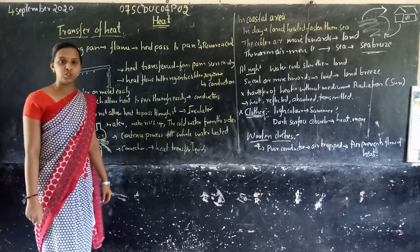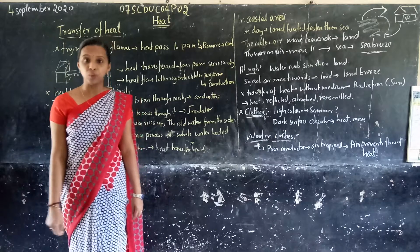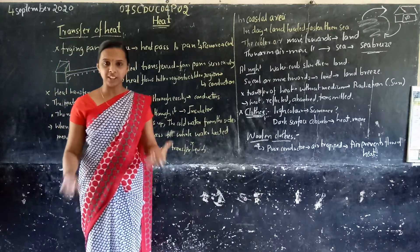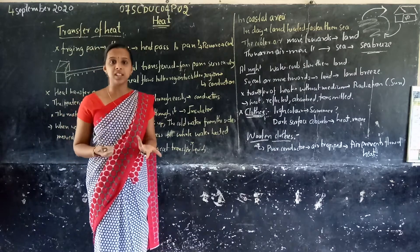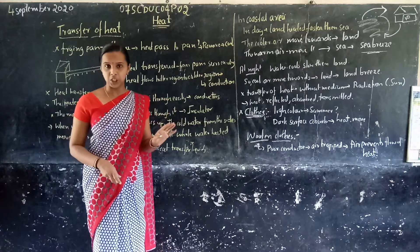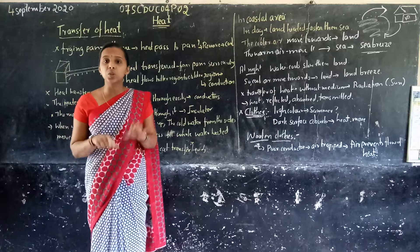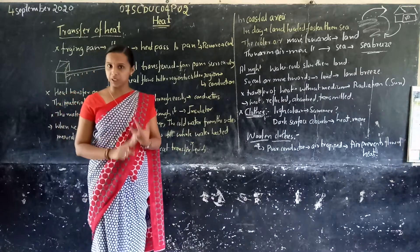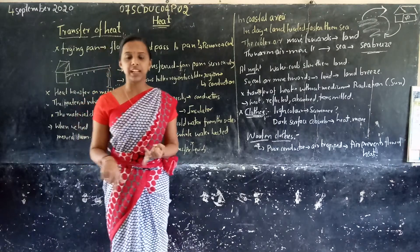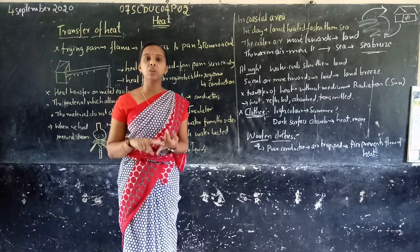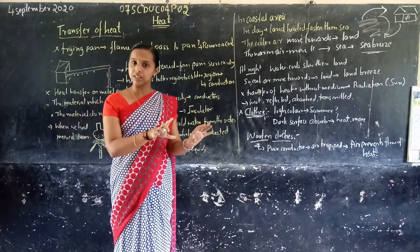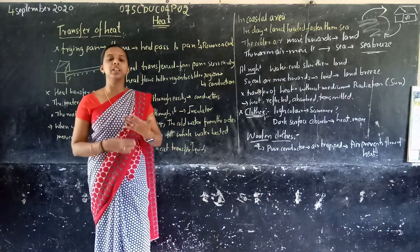Good morning students. Today we study 7th standard science, Chapter 4, Part 2. In Part 1, we studied what is heat — the hotness of an object. How we measure hotness? It is called temperature. The instrument used to measure temperature is called a thermometer. We studied clinical thermometers and laboratory thermometers, their types, how they work, their ranges, and what types of thermometers exist.